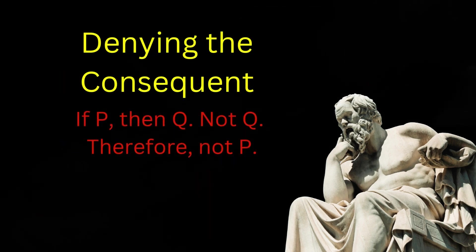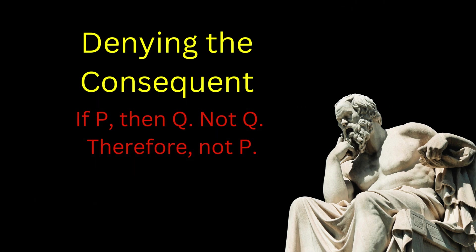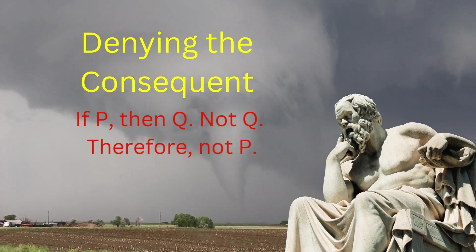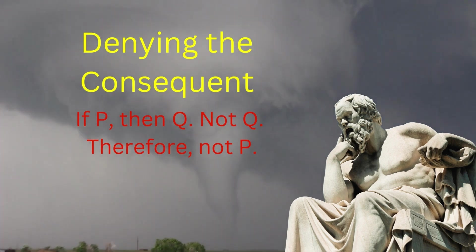However, denying the consequent, known as modus tollens, is logically valid and of the form if P then Q, not Q, therefore not P. If a tornado were hitting my house, then my house would be shaking. My house is not shaking, therefore there is no tornado hitting my house. That is valid.